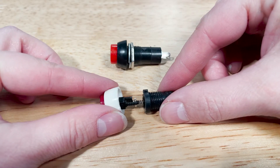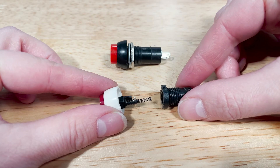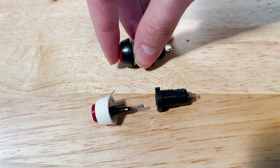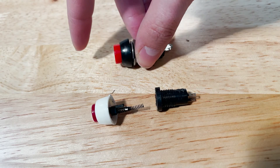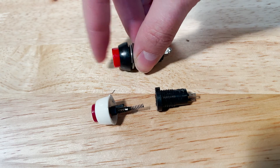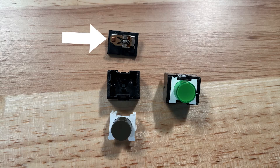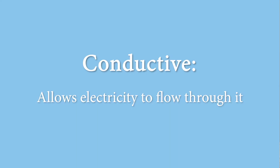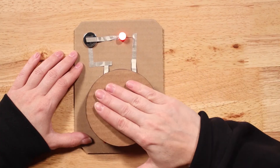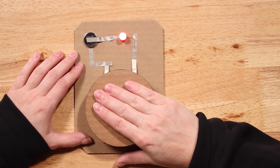Momentary buttons often have some sort of spring built in. When you push it down and then let go, the spring pulls it back up. The button contains conductive material. Conductive means it will allow electricity to flow through it. When the button is pushed, the conductive material moves to connect the two sides of the gap in the circuit.